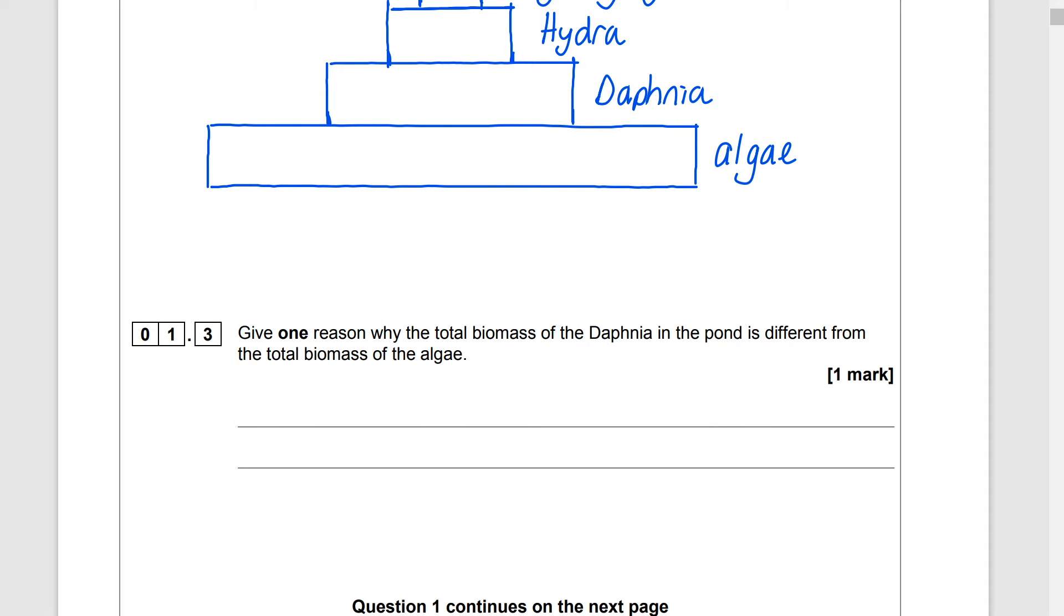Give one reason why the total biomass of the Daphnia in the pond is different from the total biomass of the algae. Now first of all they've used the word different here because they want to see if you've understood that the biomass of the Daphnia will be less than the biomass of the algae and then we need to think about where has all this biomass of algae gone because all of this biomass right at the bottom hasn't gone into the Daphnia.